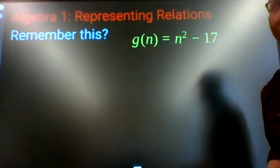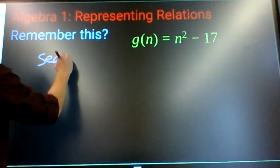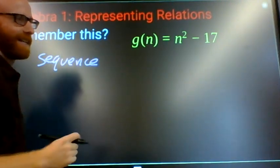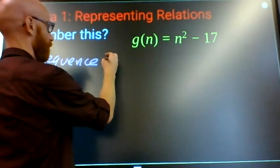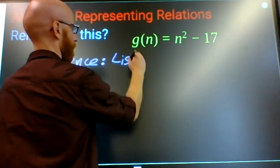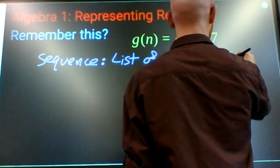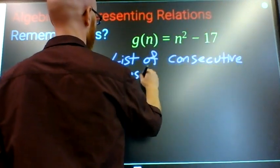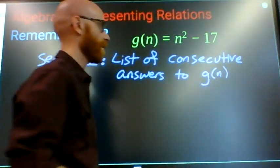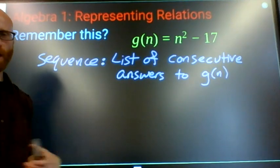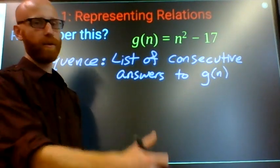The last way that we could represent relations is through what's called a sequence. The sequence is a list of consecutive answers. By consecutive, I mean one after another. Usually we either start with n equals zero or n equals one.